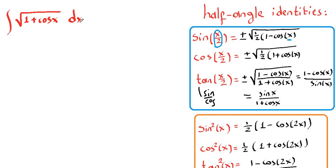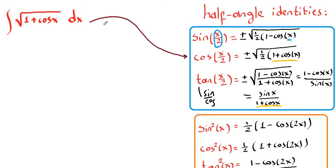Now in our integration we have 1 plus cosine of x. Let's check the pattern — where do we see 1 plus cosine of x? We see it in the cosine half-angle identity and in the tangent form as well. So we can use either of those functions for our integration.